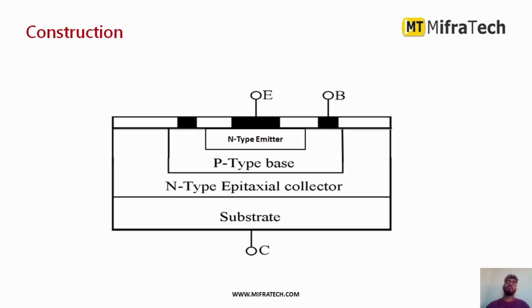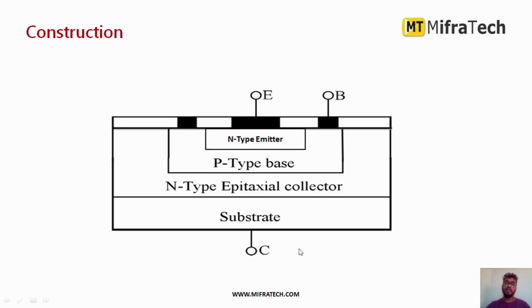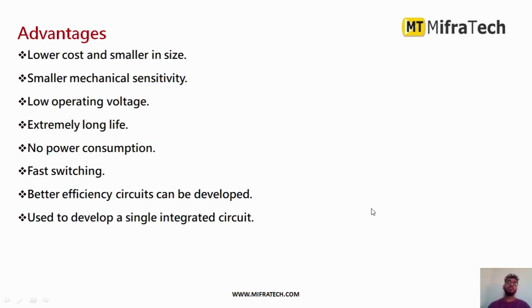This is the construction of a transistor — this is how a transistor internally looks like. It has mainly three terminals: base, emitter, and collector. Inside, it has N-type and P-type materials. As shown, this is an NPN transistor with an N-type emitter, N-type collector, and a base in between. At the bottom, there is a substrate, also called the body.